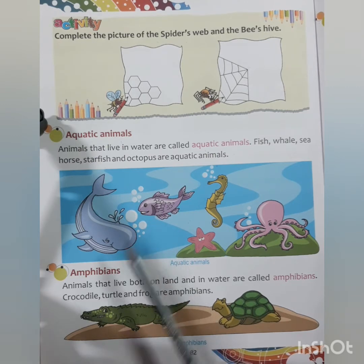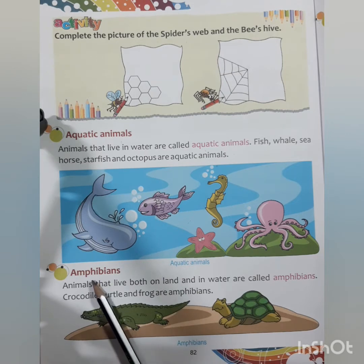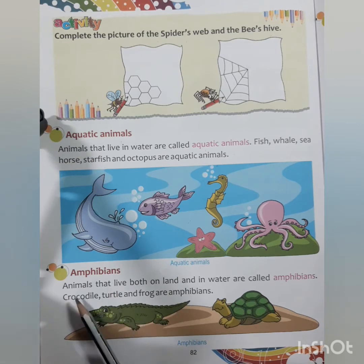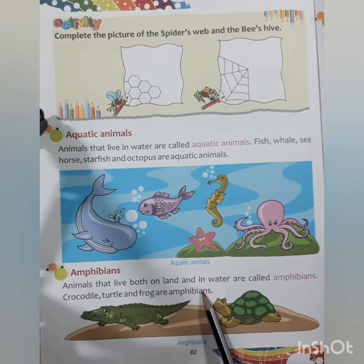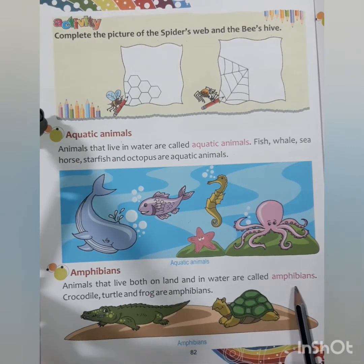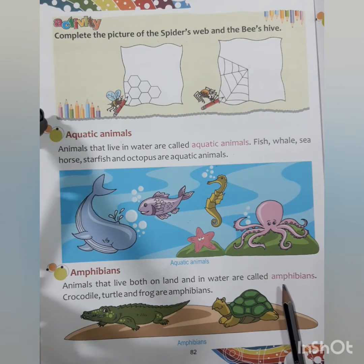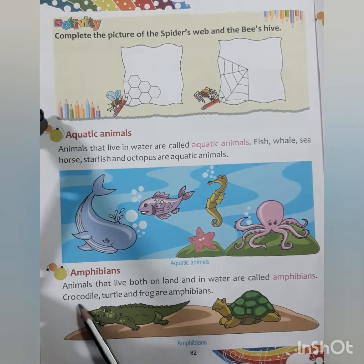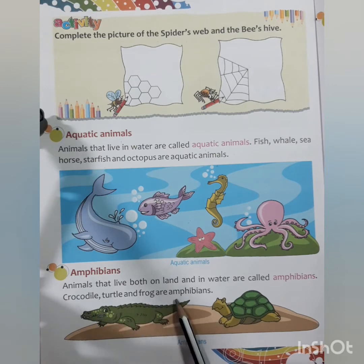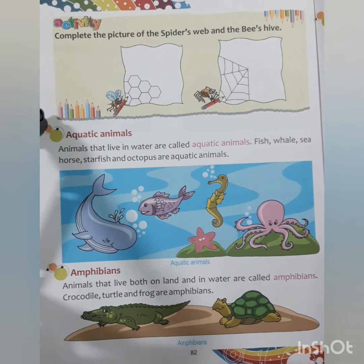Now let us learn about amphibians. Animals that live both on land and in water are called amphibians. Crocodiles, turtles, and frogs are amphibians — they can live in water all the time and also live on land all the time.